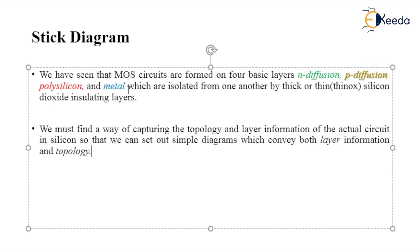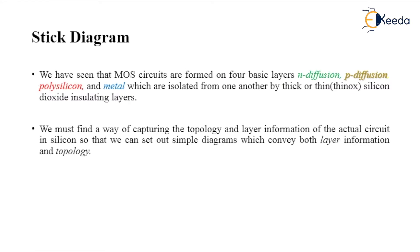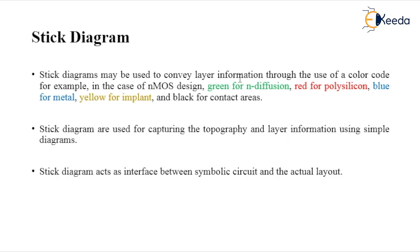Stick diagrams convey the basic layer information through the use of color codes. Conveying the basic layer information of n-diffusion, p-diffusion, polysilicon, and metal with the use of color codes is considered a stick diagram. For NMOS design, n-diffusion is displayed with green, polysilicon with red, metal with blue, implantation with yellow for depletion-type MOSFETs, and black for contact areas.